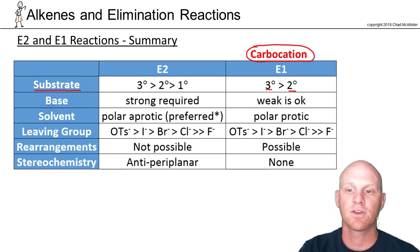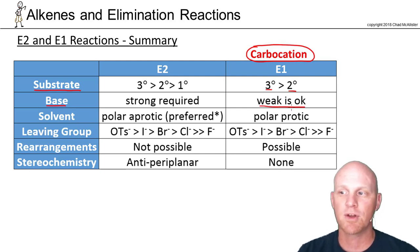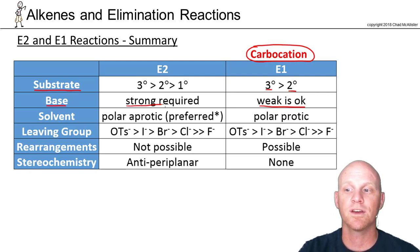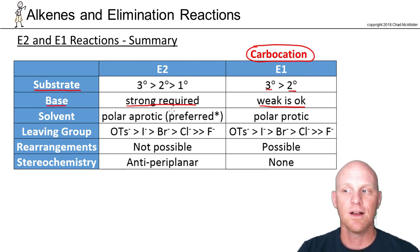As far as the base goes, for E1, a weak base is okay — it's not involved in the rate-determining step at all, just like a weak nucleophile was okay for SN1. For E2, because the base is involved in the rate-determining step, a strong one is required, just like SN2 required a strong nucleophile.